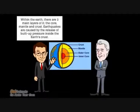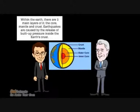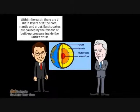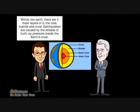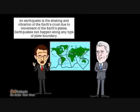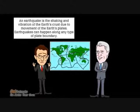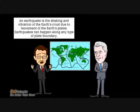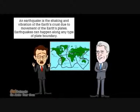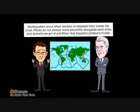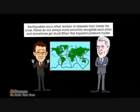Within the Earth, there are three main layers: the core, mantle, and crust. Earthquakes are caused by the release of built-up pressure inside the Earth's crust. An earthquake is the shaking and vibration of the Earth's crust due to movement of the Earth's plates. Earthquakes can happen along any type of plate boundary. Earthquakes occur when tension is released from inside the crust.